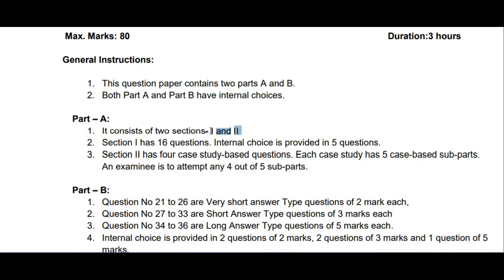Part A has two sections — Section 1 and Section 2. Section 1 has 16 questions. Last time there were 20 questions for one mark, with 10 multiple choice, 5 fill in the blanks, and 5 short answer questions. This time we have 16 solid one-mark questions with no multiple choice or fill in the blanks, and internal choice is provided in five questions.